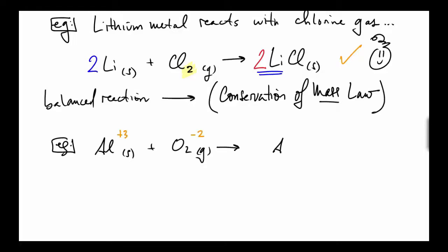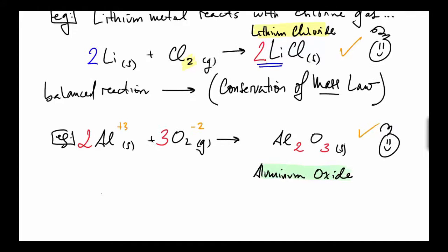Let's look at what happens when solid aluminum and oxygen gas react. Aluminum has a plus three charge, oxygen minus two, so you need two of one and three of the other to make that balanced charge on one formula unit. That's what Al2O3 is—aluminum oxide.